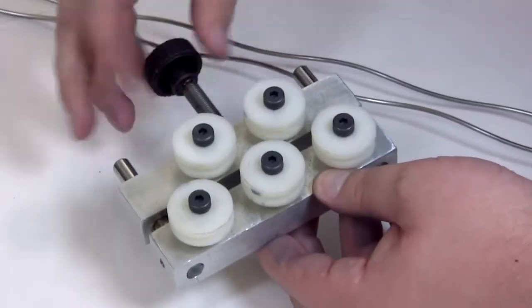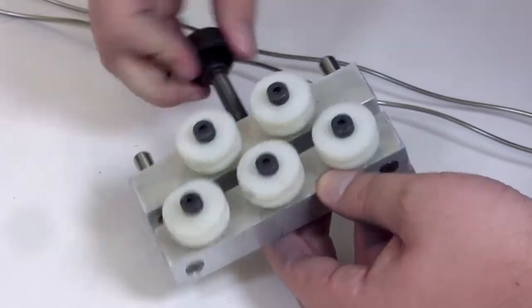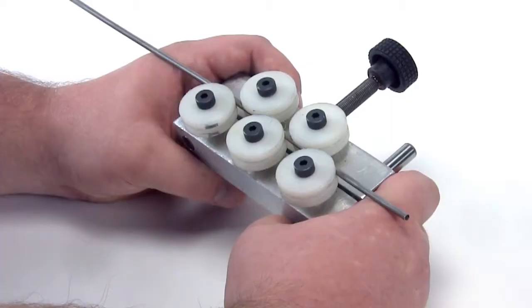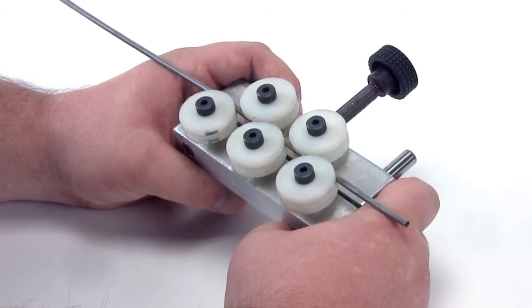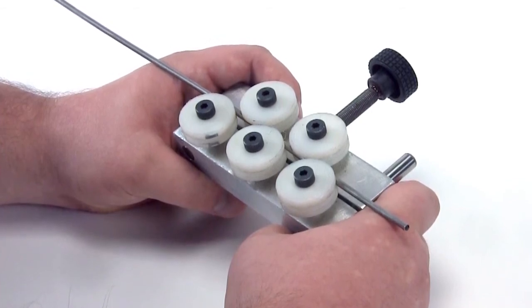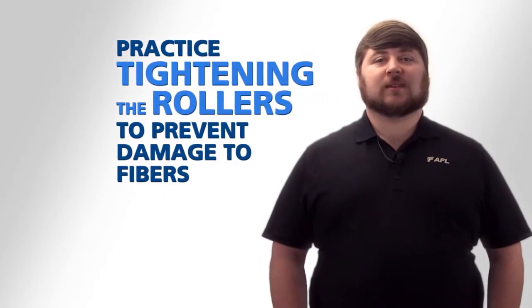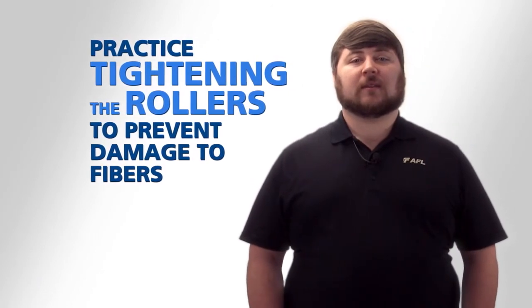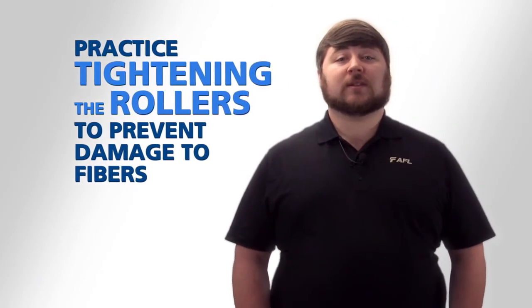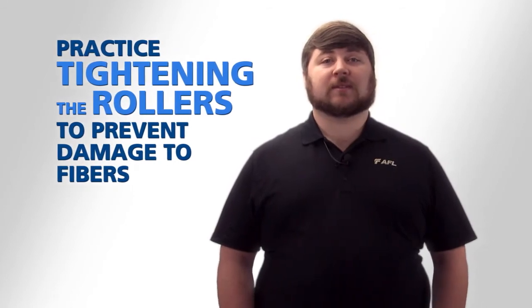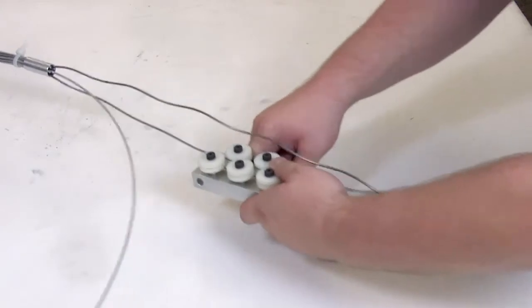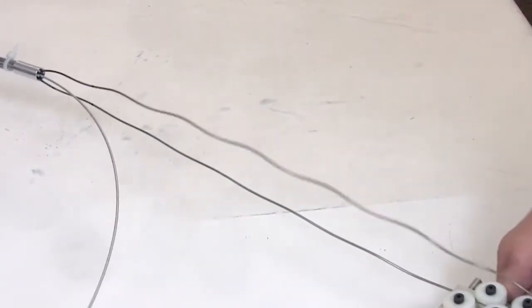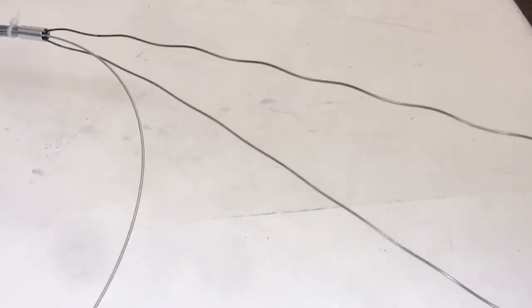If using an AFL tube straightener, loosen the rollers to allow the stainless steel tube to pass through easily. Insert the free end of one tube into one end of the tool between the rollers and out of the other end. Practice this procedure on a scrap length of tubing to get an idea of how tight the rollers should be. Over-tightening may crush the tubes and or damage the fibers. Once the rollers are tightened, use the handles to slide it towards the free end, thereby straightening the tube and making its removal easier.